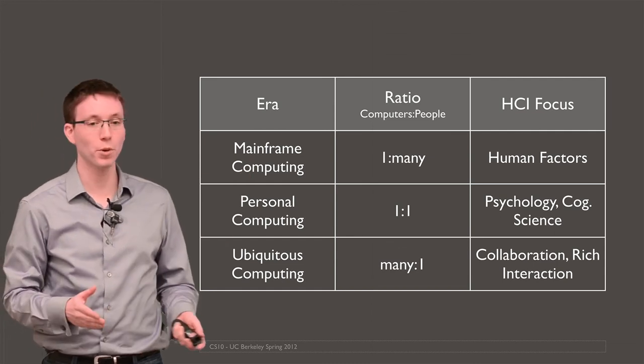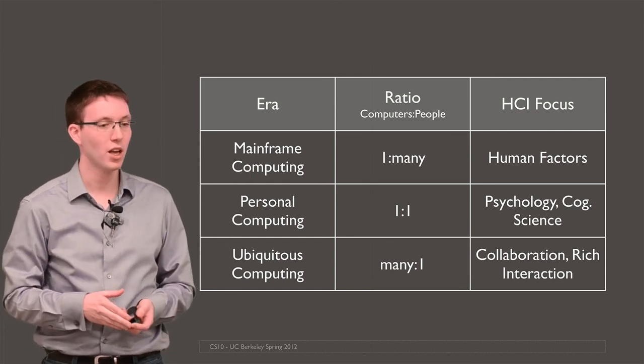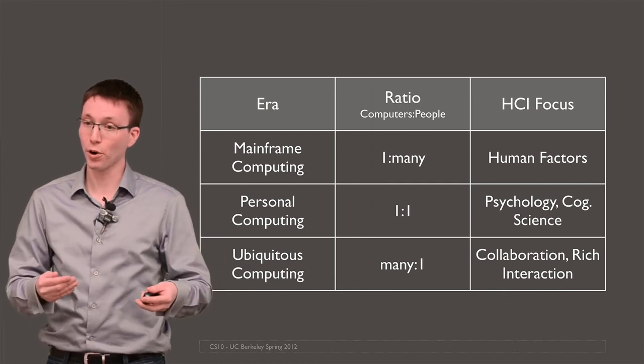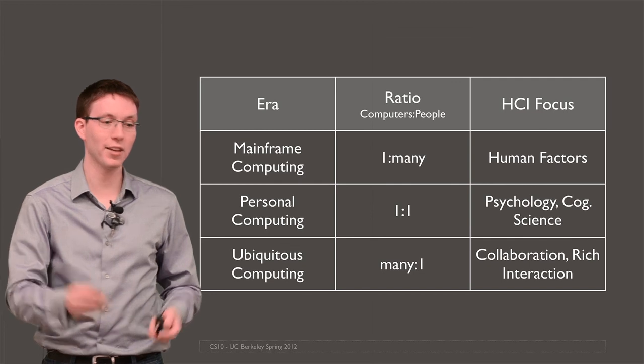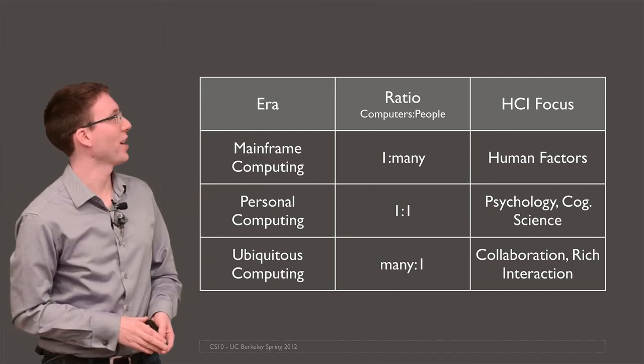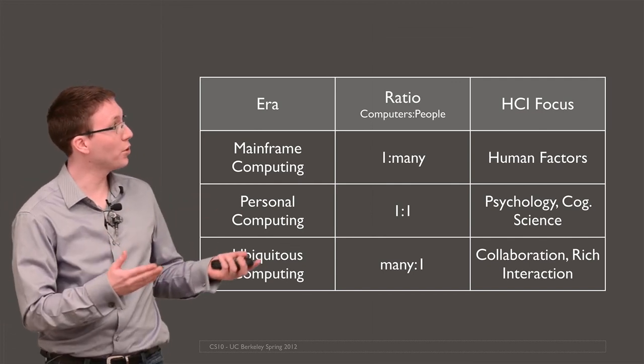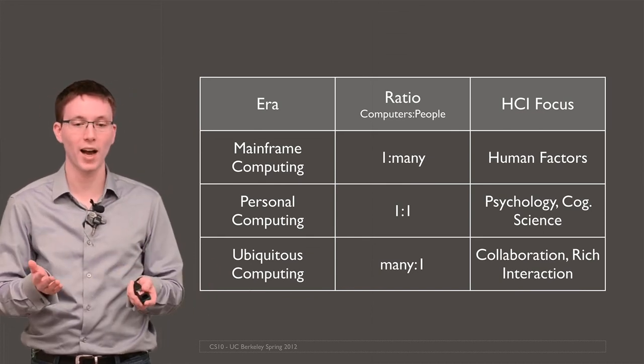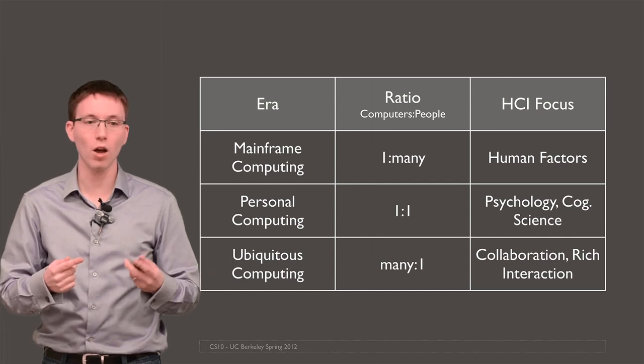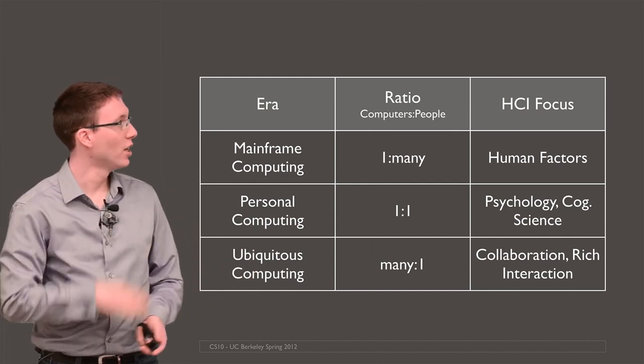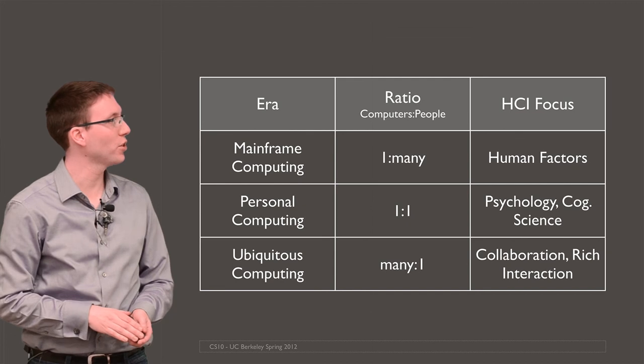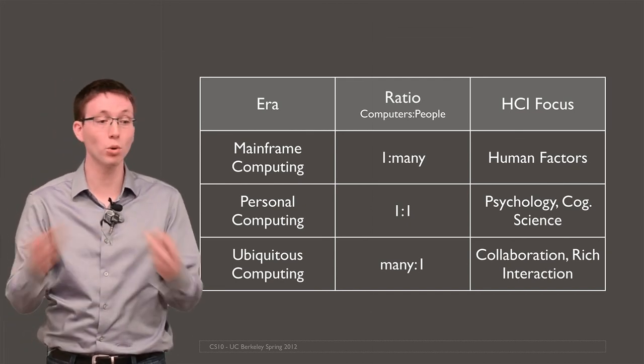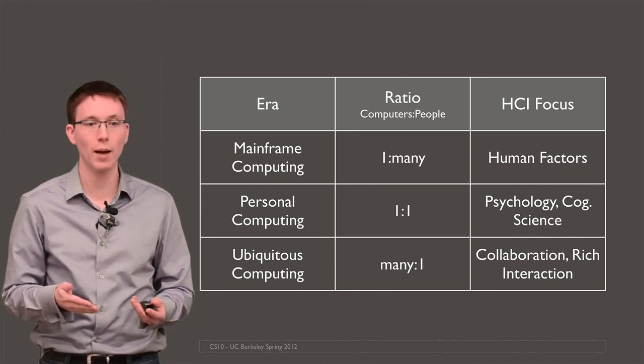And you can see these different areas find expression in different types of HCI research. So, in the early days, mainframe computing, it was all about human factors. How do we make an efficient interface so one person can get their task done quickly and then let the next person use the mainframe? Personal computing was very much concerned with psychology and cognitive science. Understanding how the dialogue between one person and one computer happens. Now that we're in the age of ubiquitous computing, there's much more of a focus on what happens when computers don't look like desktop computers. And what happens when we use computers to collaborate with each other.